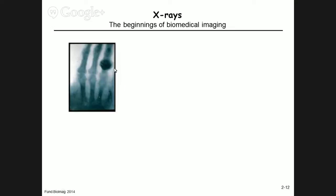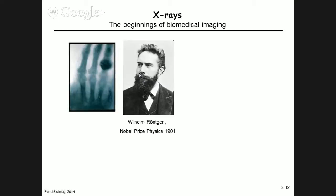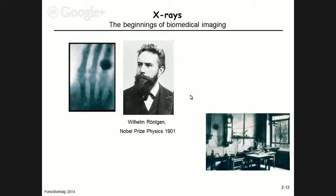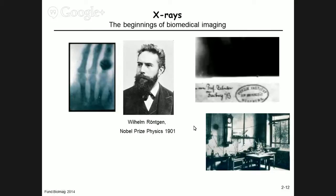We've already talked last week about this image from Röntgen's wife with the finger — you can see the bones, that was a great success. In the 1950s you could go to the shoe store and have your feet x-rayed to see if they fit. At some point people realized x-rays have other effects. It was Wilhelm Röntgen who got the first Nobel Prize in physics for this. To give you an idea, this is the lab in the 1890s where he made these observations.